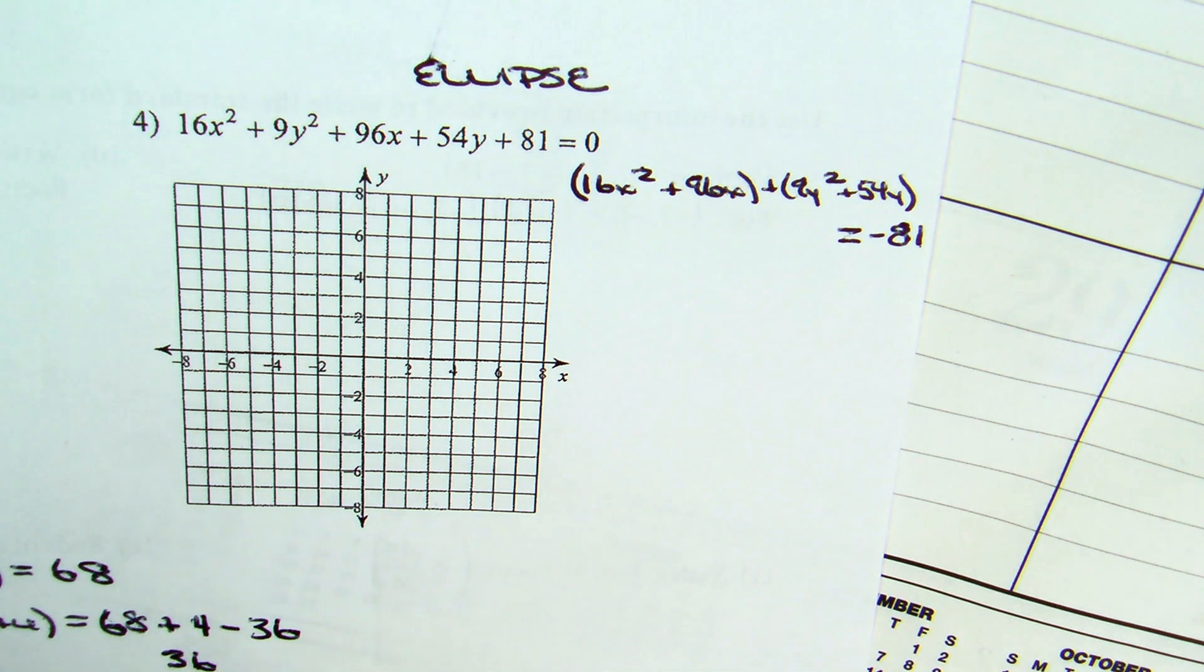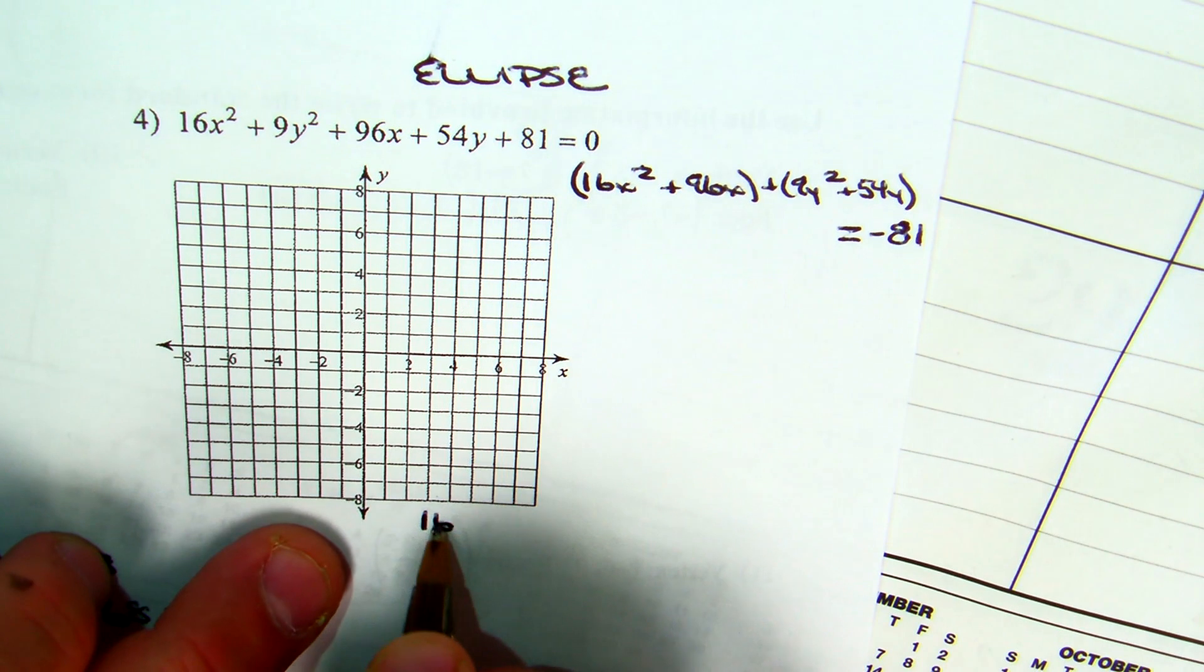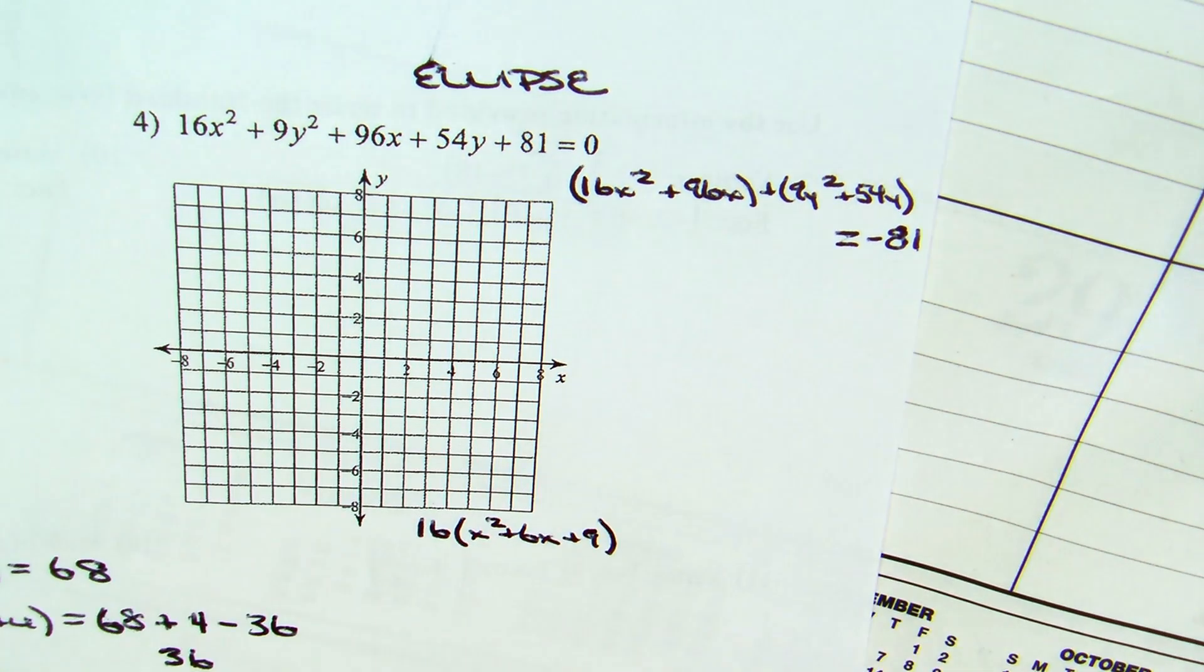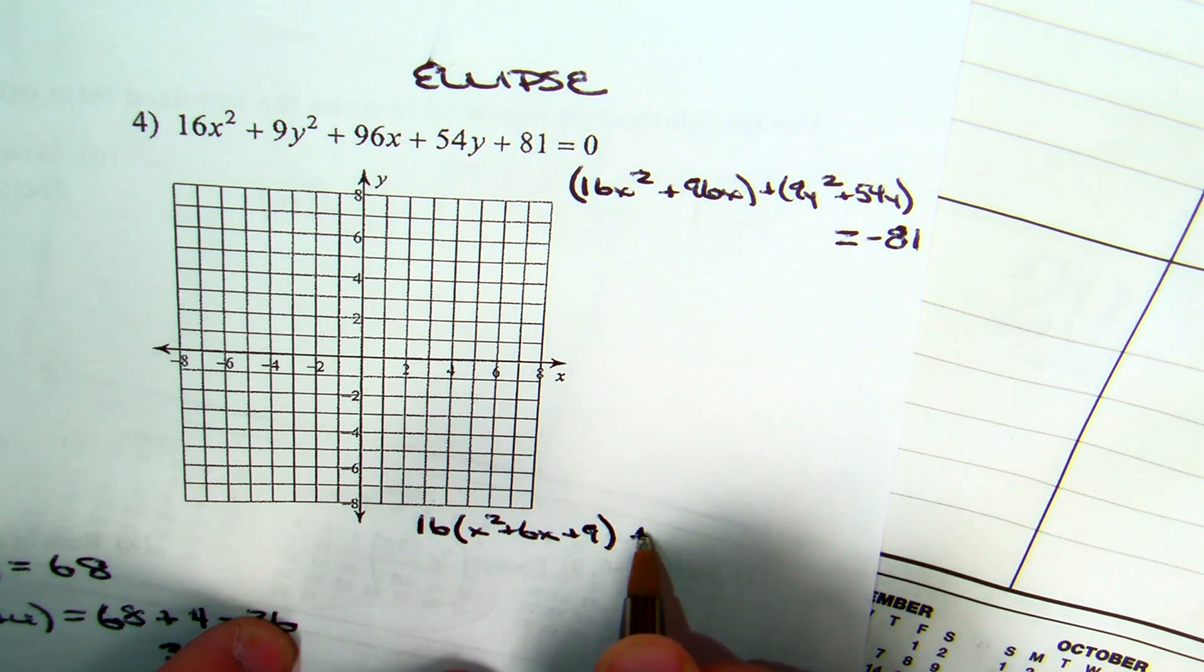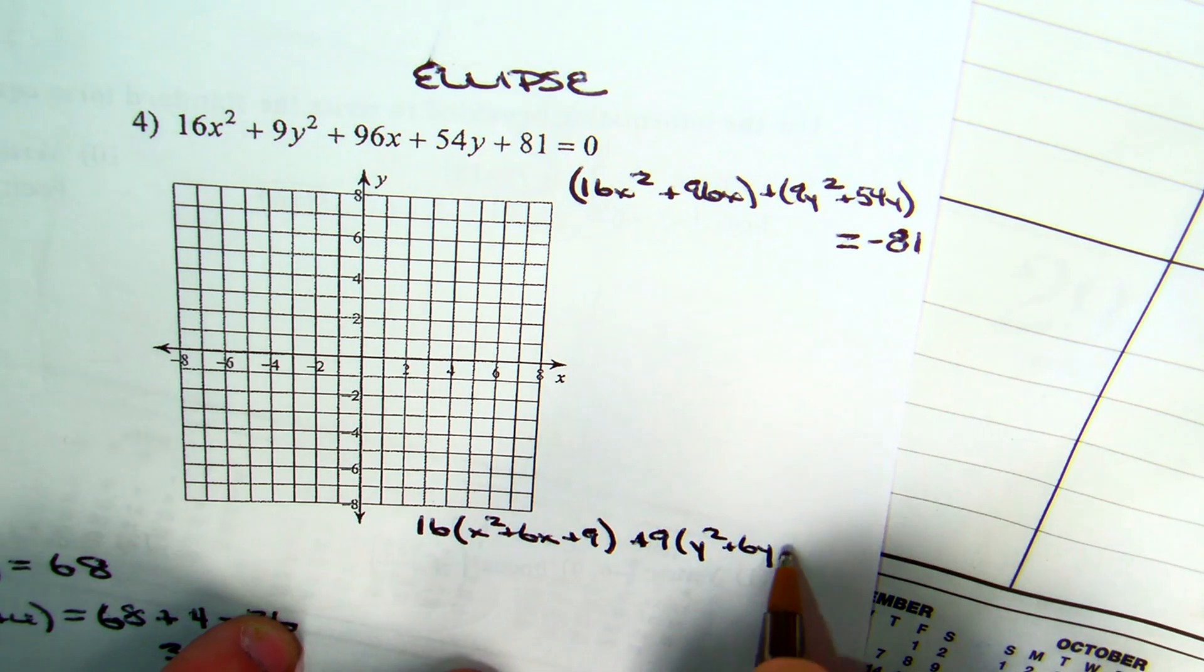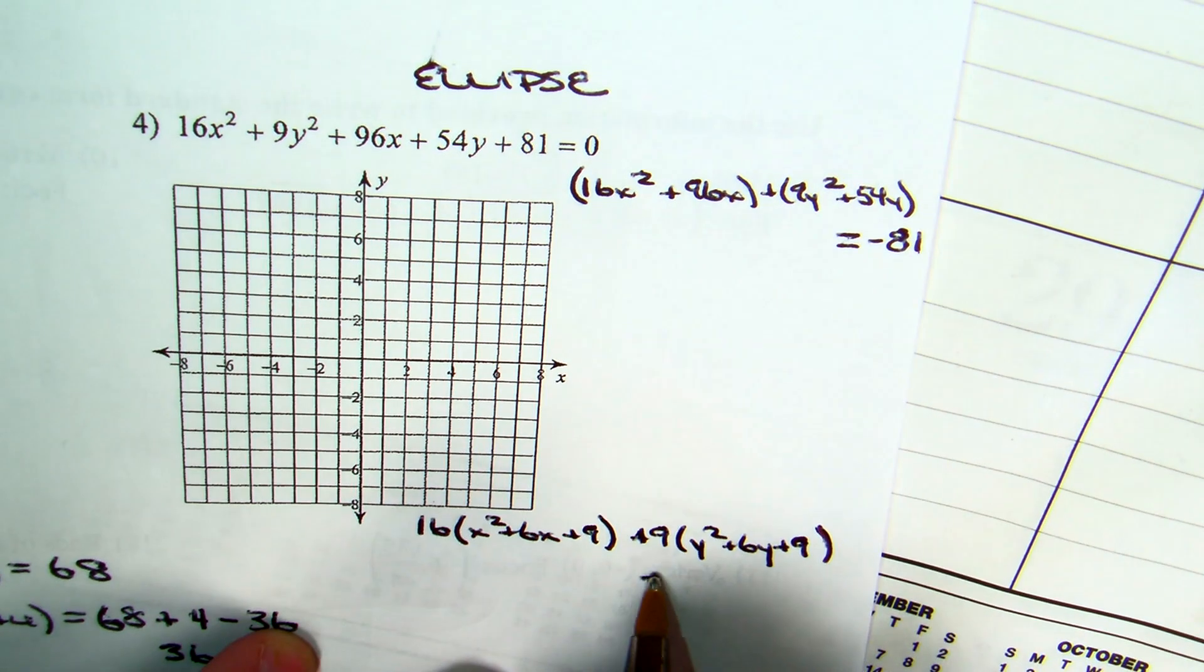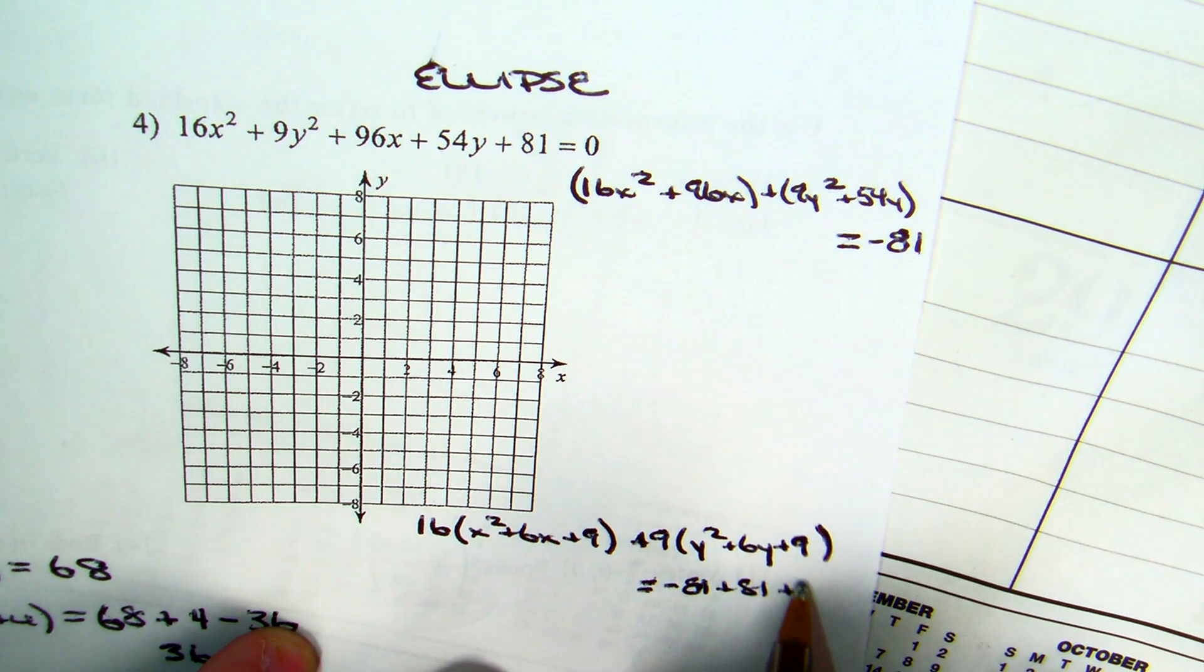16x squared plus 96x plus 9y squared plus 54y equals negative 81. What's my coefficient of x squared? 16. So, that's what I'm pulling out. 16 times x squared plus 6x plus 9. What's my coefficient of y squared? 9 times y squared plus 6y plus 9 equals negative 81 plus 81 plus 144.